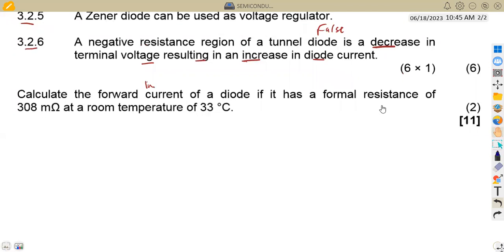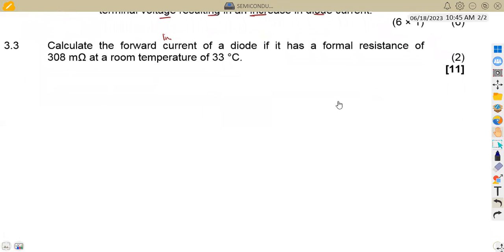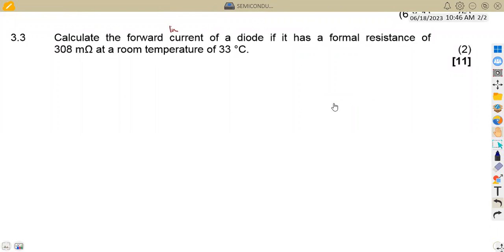On question 3.3, we are asked to calculate the forward current of a diode if it has a formal resistance of 300 milliohms at room temperature. So we need to calculate the forward current. Since we are given the resistance, remember that from forward resistance, we know that it is equivalent to KT over QI, where we have got the Boltzmann constant, the temperature in kelvins, the charge electron charge, and the forward current. So we are supposed to find this I, because we have got the resistance at 300 milliohms, that is at room temperature of 33 degrees Celsius, which we convert to kelvins by adding 273. We obtain our value in kelvins, which is going to give us 306 Kelvin.